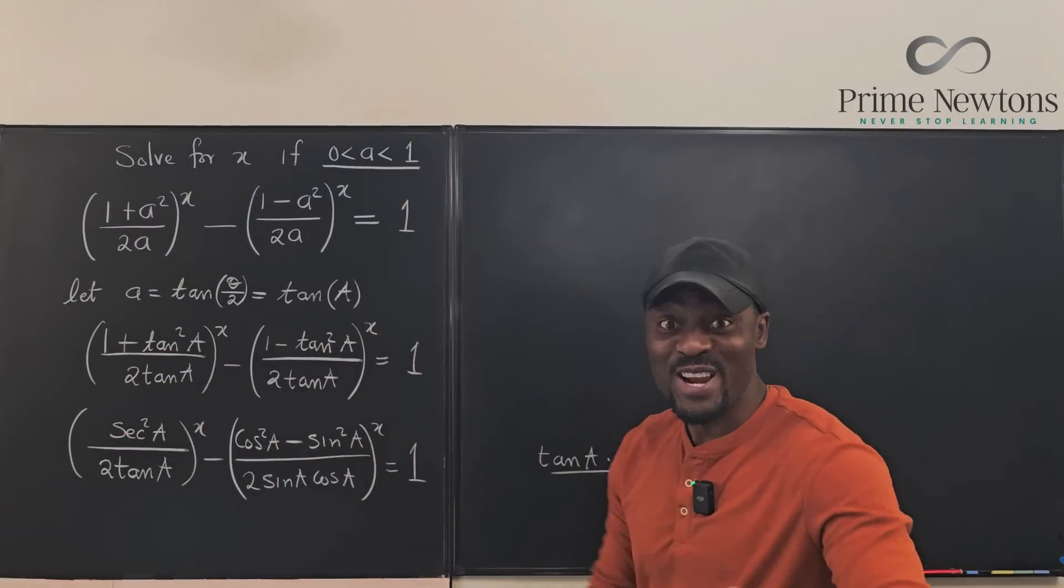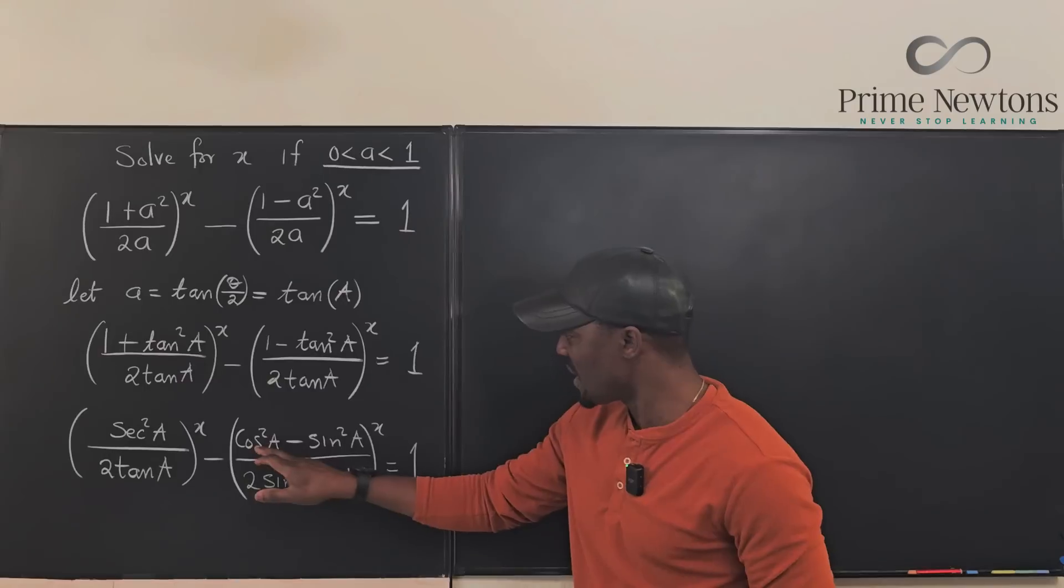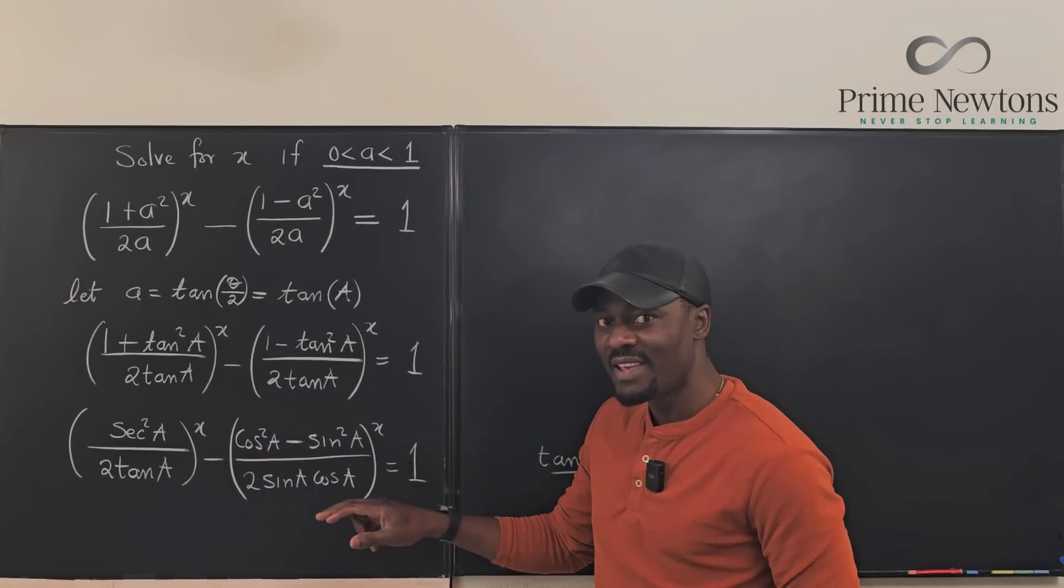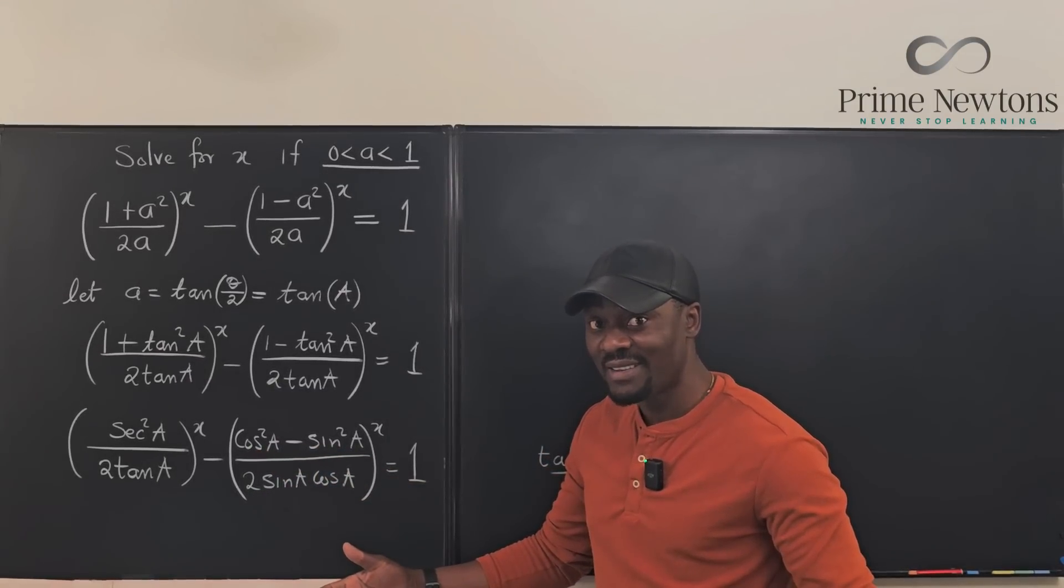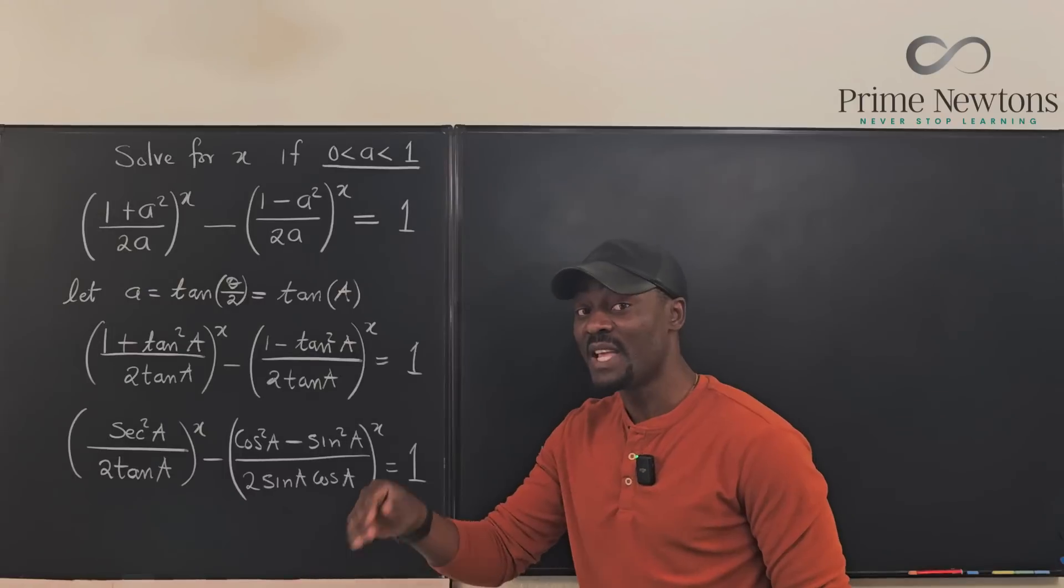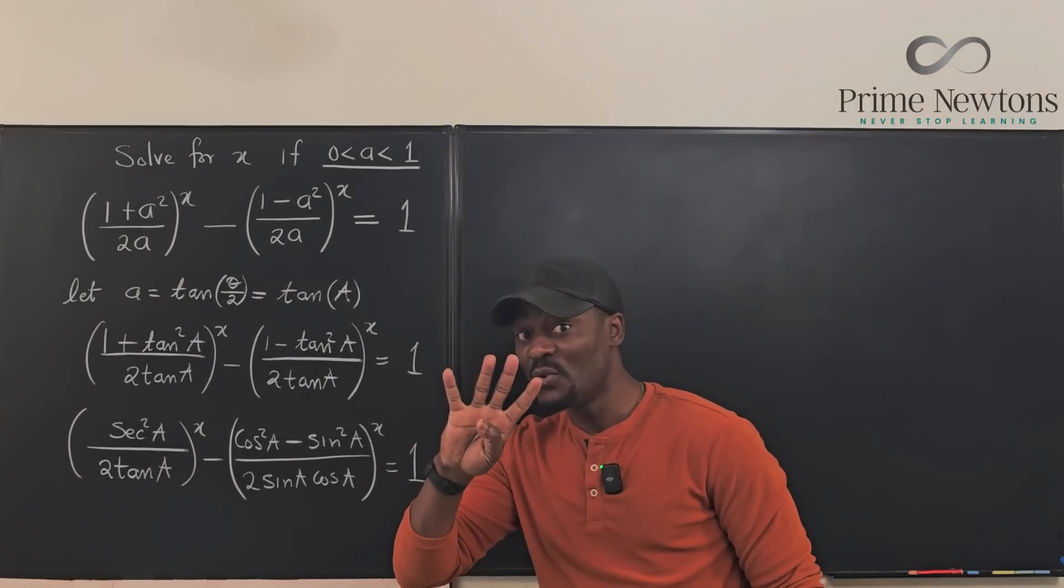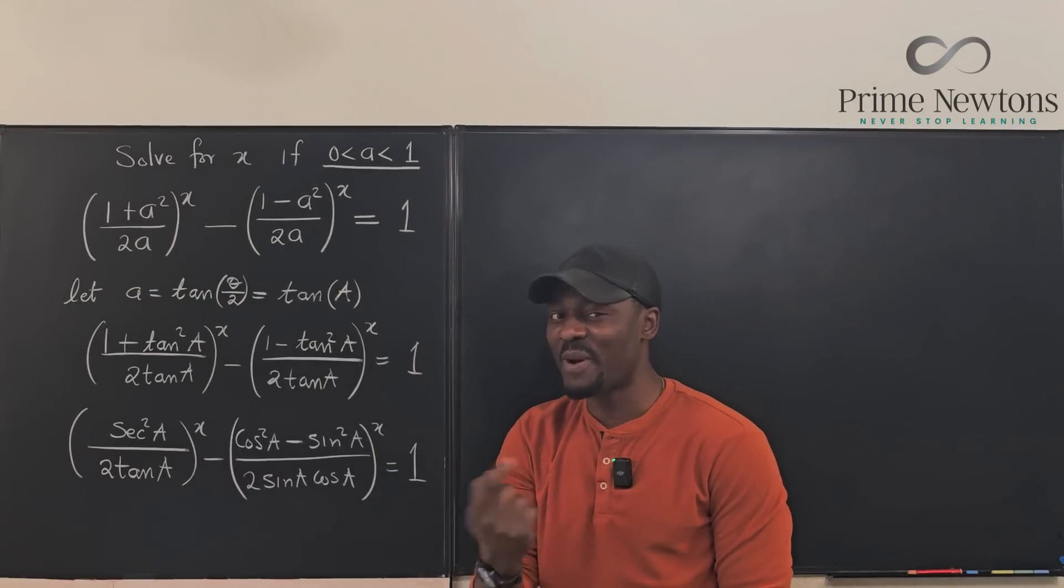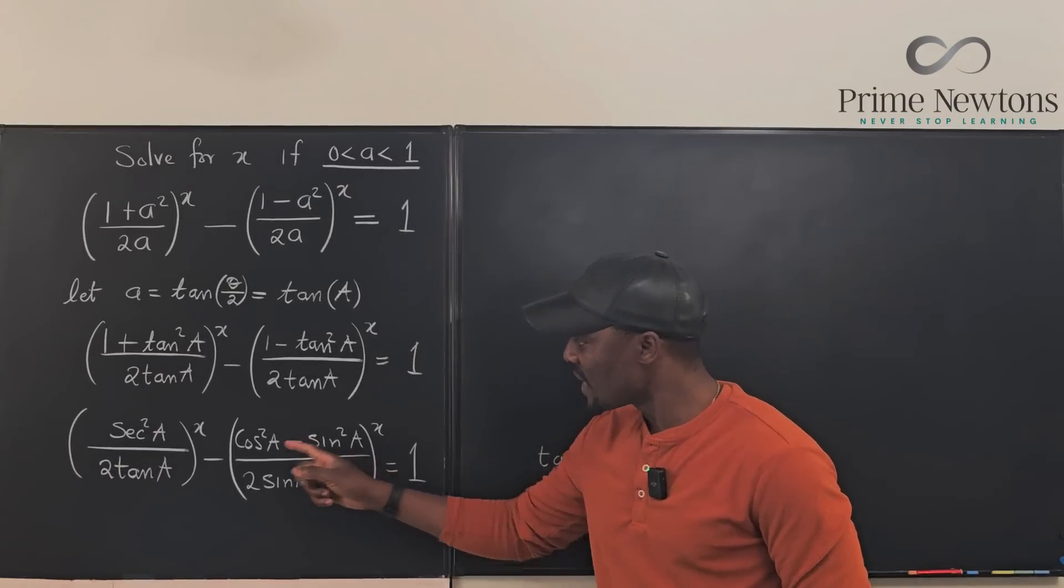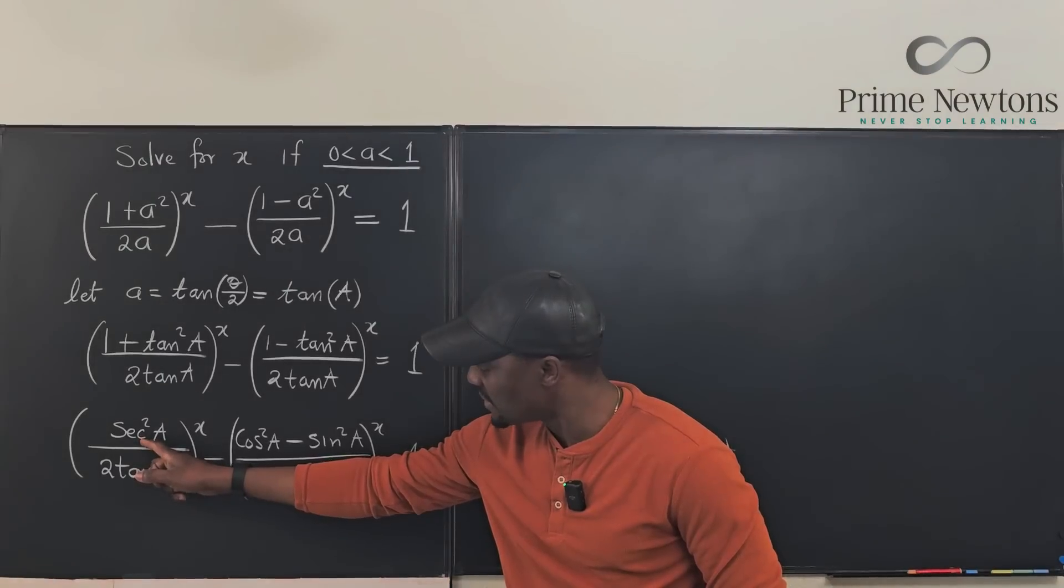Okay I already saw something. Do you guys know that cosine squared A minus sine squared A is cosine 2A? Yes that's the double angle identity for cosine. It shows up in four ways. You want to make sure you know all the four ways. I talk about this when we do integration. That's it. This is cosine 2A.